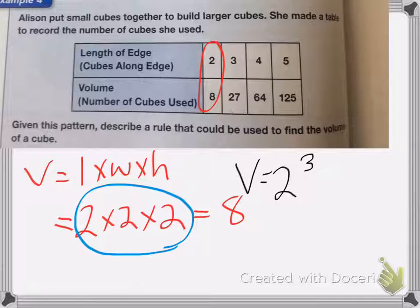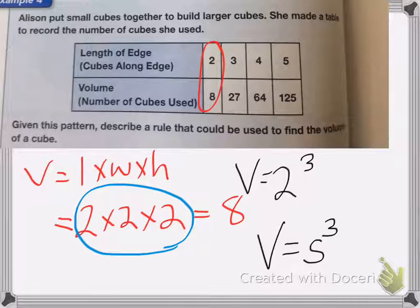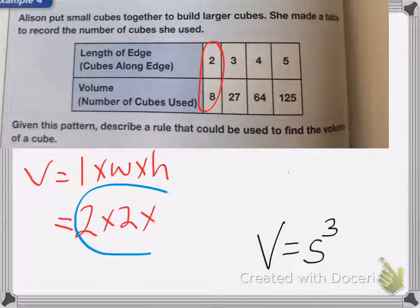We can say 2 cubed, volume equals 2 cubed. So that means that my rule is going to be that my volume is going to be the length of one of my sides cubed to find the volume of a cube.